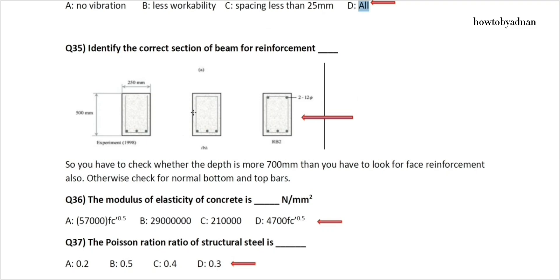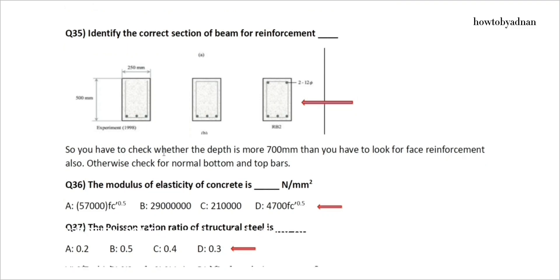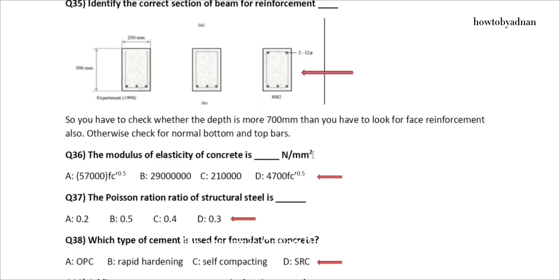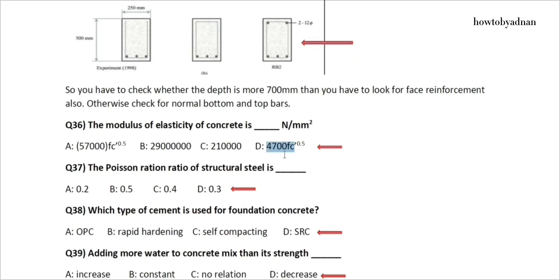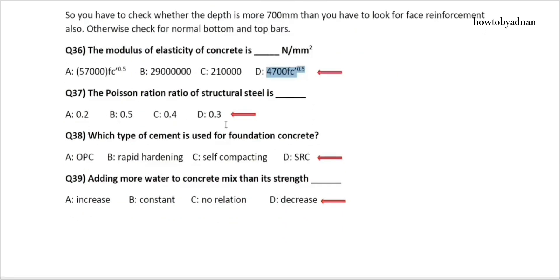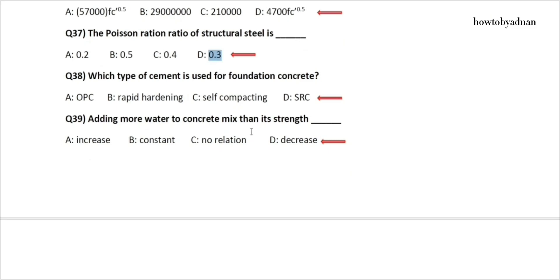Question 36: The modulus of elasticity of concrete is how many Newton per m²? The answer is option D: For 1700 Fc, it is 0.5. Question 37: The Poisson's ratio of structural steel is? The answer is option D: 0.3. Question 38: Which type of cement is used for foundation concrete? The answer is option D: SRC. Question 39: Adding more water to a concrete mix — its strength? The answer is option D: Decreases.